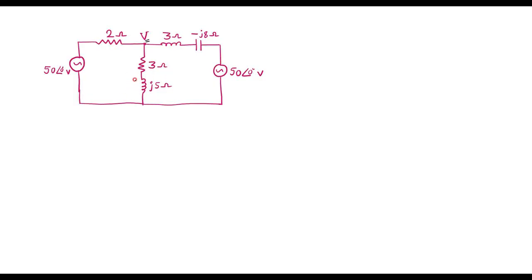So in node analysis, the first thing is we need to mark all branch currents. Let me assume current through this branch is I1, current through this branch is I2, and current through this branch is I3.